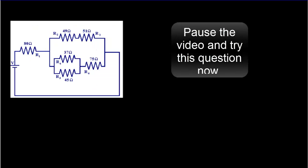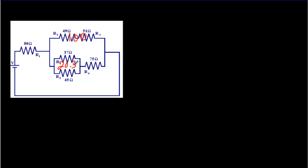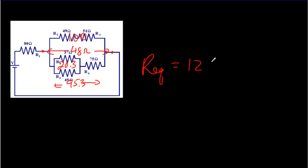One last one — pause the video, try to work it out, and then come back for the answer. The 49 and the 51 come out to 100 ohms. The 37 and 45 together in parallel give 20.3 ohms. That 20.3 and the 75 in parallel gives 95.3 ohms for the equivalent resistance of that branch. Then the 95.3 and the 100 in parallel gives 48 ohms for that entire section. Finally, 48 ohms and 80 ohms together give a final equivalent resistance of 128 ohms.